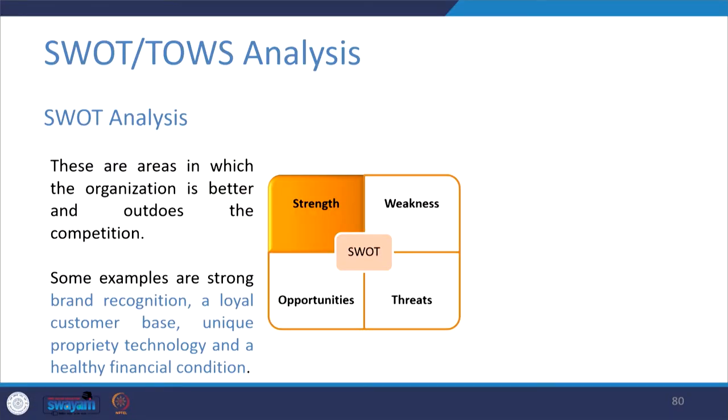Strengths are areas in which the organization outdoes the competition. Examples include brand recognition, a loyal customer base, unique proprietary technology — such as a patent that bars competitors from entering the market for 20 years — and a healthy financial condition. That financial support allows you to execute all four P's of marketing and assist your sales team in a better way.